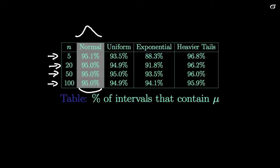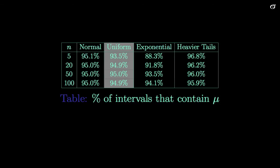Now, what about when that assumption is violated? Let's look at the uniform distribution. Remember, this uniform distribution has shorter tails than the normal distribution — a little truncated. When we have a sample size of 5, the true coverage probability is only around 93.5%, which is not too bad. And once we get up to sample sizes of 20 or 50, we're actually very, very close to 95%. So sampling from the uniform distribution, even though the normality assumption is violated, the procedure works quite well even for smallish sample sizes.